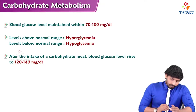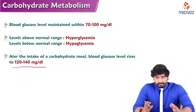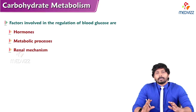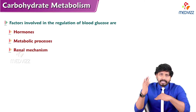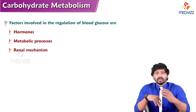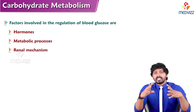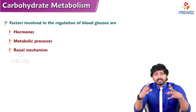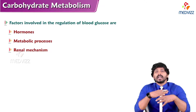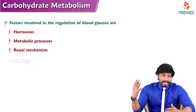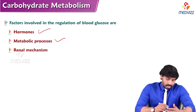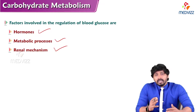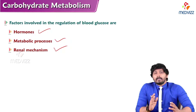Generally, after intake of carbohydrate, blood glucose levels rise to 120 to 140 mg/dL but not beyond that. There should be a mechanism that does not allow blood glucose to go beyond or below the normal range. We have specific mechanisms and many factors involved in regulation of blood glucose — that is blood glucose homeostasis — maintained by three key factors: hormones, metabolic processes, and the renal mechanism.